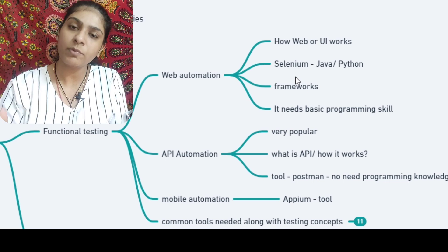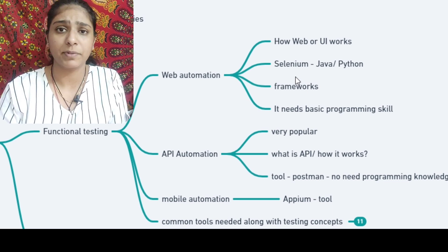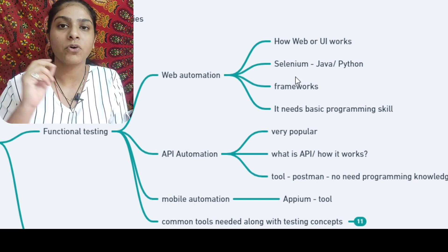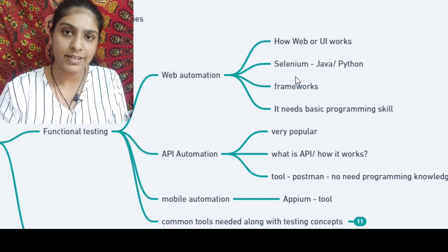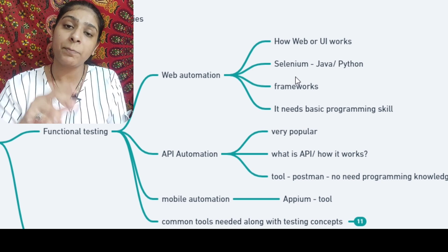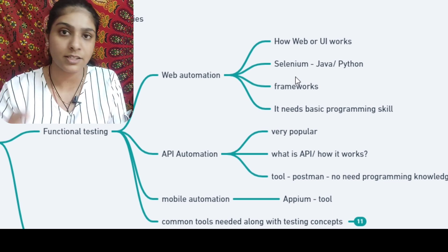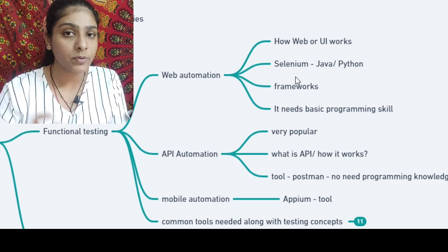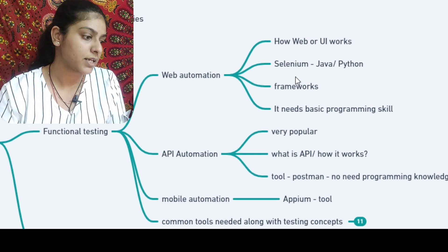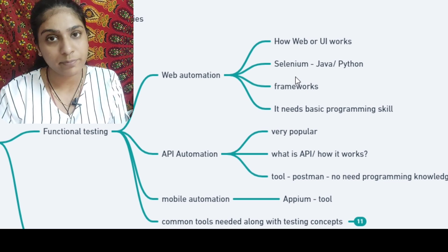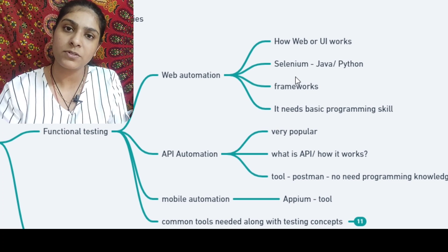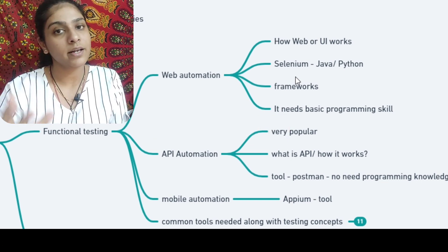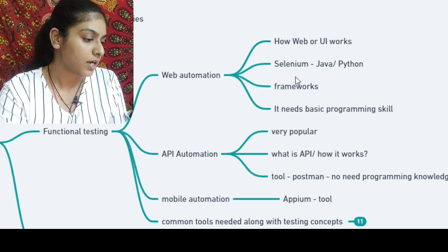The next type is API automation. This is a very important type of automation method, because most companies use mobile phones, tablets, or iPads — handheld devices. The main tool for API automation testing is Postman. It is a free and open source tool. You can download it on your laptop and there are free resources for Postman on YouTube.